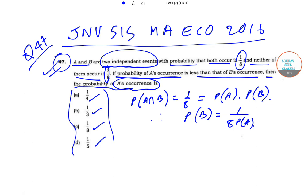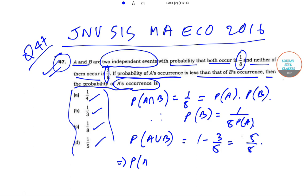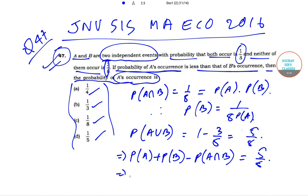Now, P of A union B — since neither occur is 3 by 8, P of A union B is equal to 1 minus 3 by 8, which is equal to 5 by 8. So now we can write that P of A plus P of B minus P of A intersection B is equal to 5 by 8. We know that P of A intersection B is 1 by 8, so this is equal to 5 by 8.